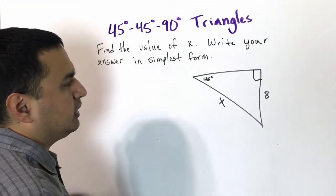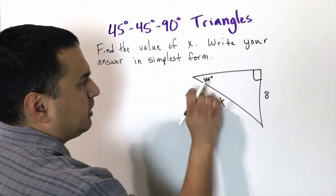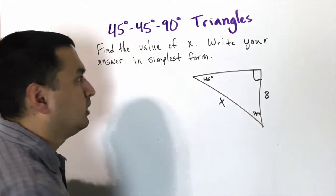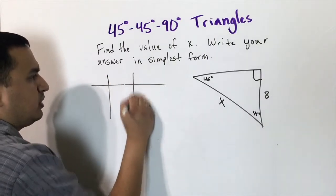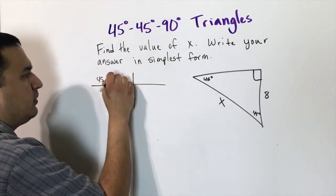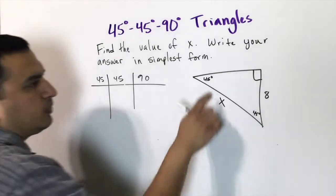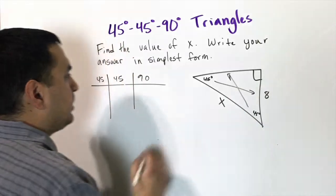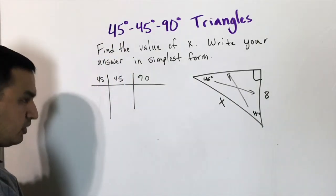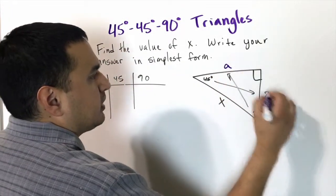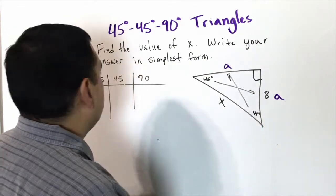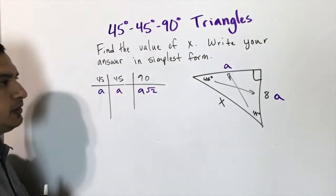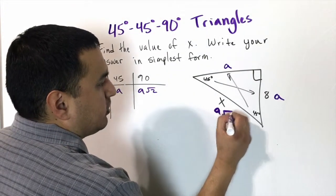Looking at this 45-45-90 example: if this is 45 and that's 90, then the other angle has to be 45 degrees as well. We can draw a table with 45, 45, and 90. The two 45° angles are across the two legs, which we label 'a', and the hypotenuse across the 90° is a√2.